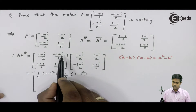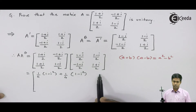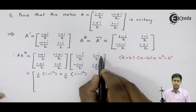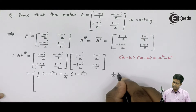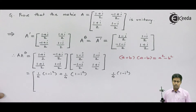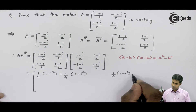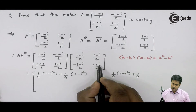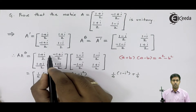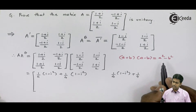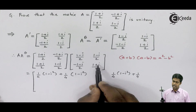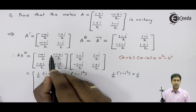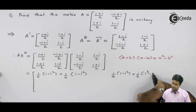Now I will multiply the first row with the second column. We get 1/4 × (1+i)(1-i), applying the formula giving 1 - i². Then 1/4, and here we have (i+1)(i-1). Considering i as a and 1 as b, applying the same property: (i+1)(i-1) gives i² - 1.